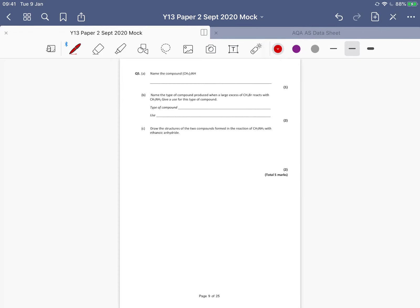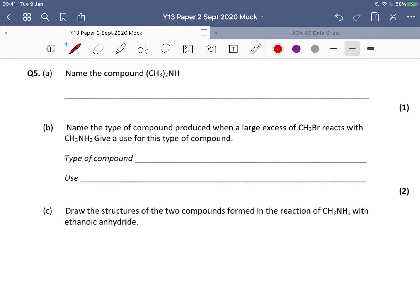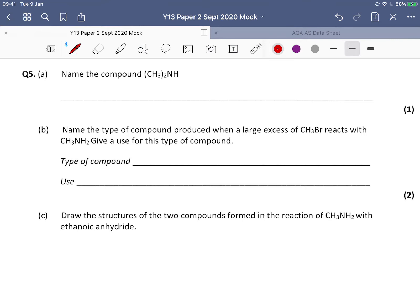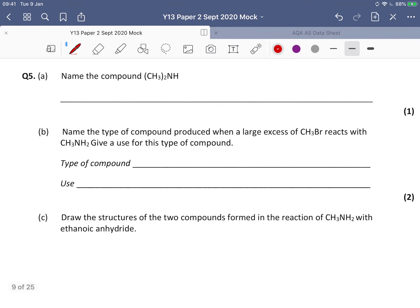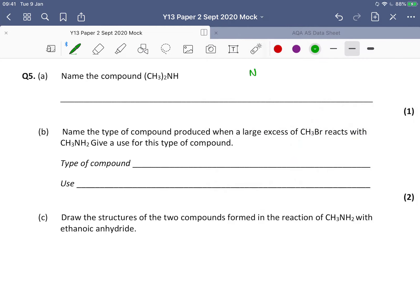Okay, now we're up to question five, a short question. The first thing it's asking us to do is to name the compound. I think if you're not sure, it helps sometimes to just draw it to get a better idea of what's going on. So we've got a nitrogen, we've got a hydrogen attached to it.